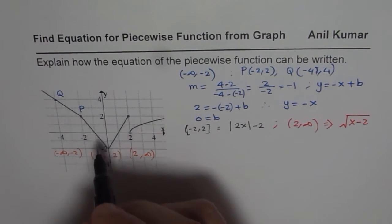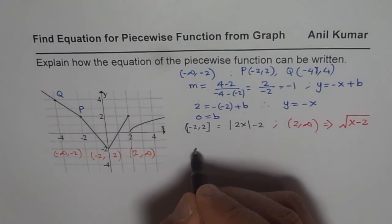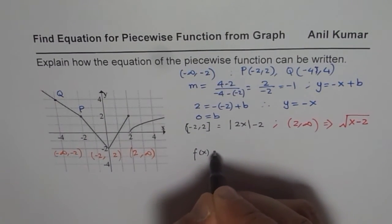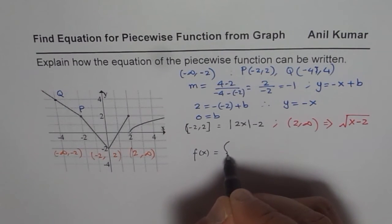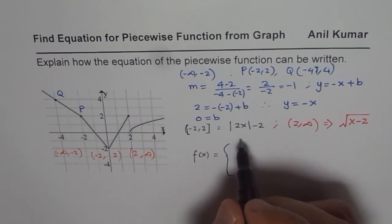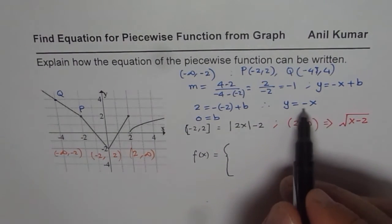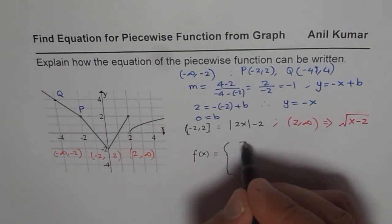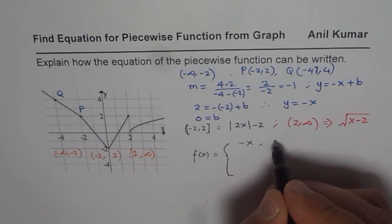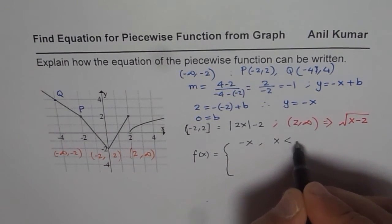Now, let us write down the function itself. So as we consider this into three pieces, we can say f of x is equal to these three pieces. The first piece is a straight line, minus x is the equation. So we say it is equal to minus x, if x is less than minus 2.